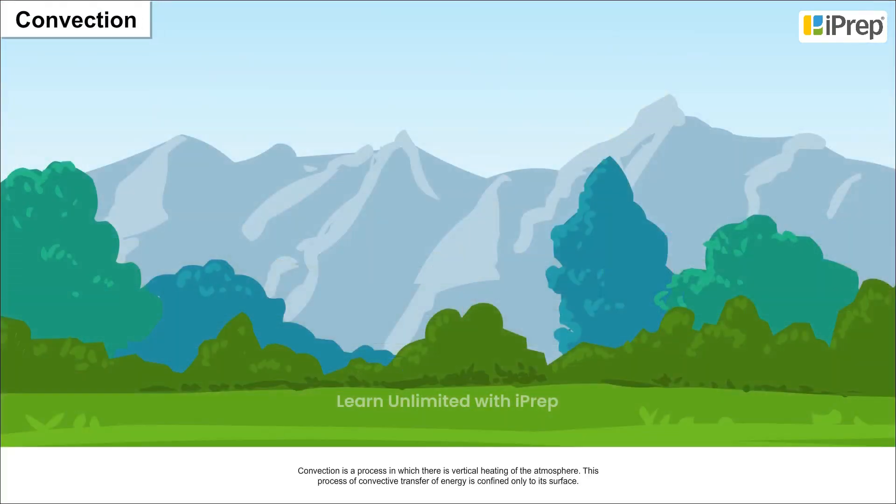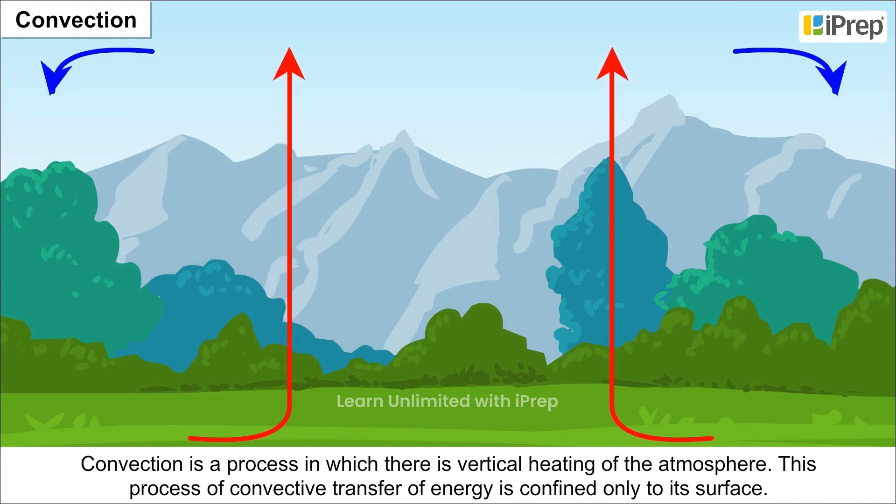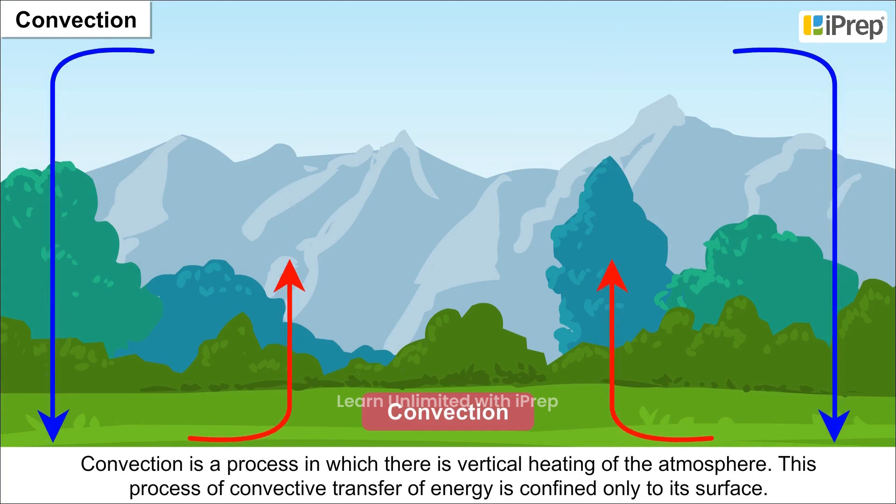Convection: Convection is a process in which there is vertical heating of the atmosphere. This process of convective transfer of energy is confined only to its surface.